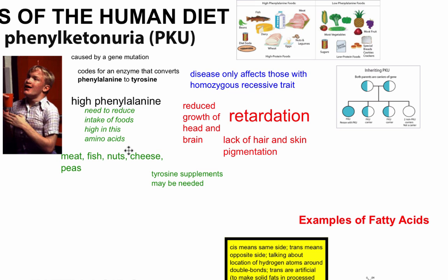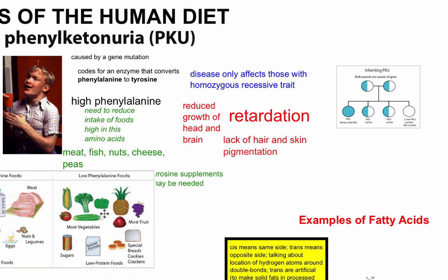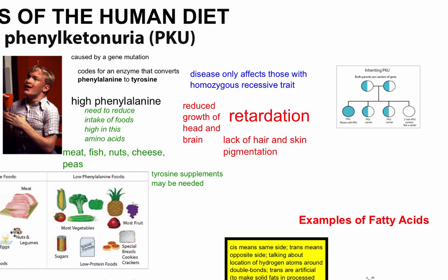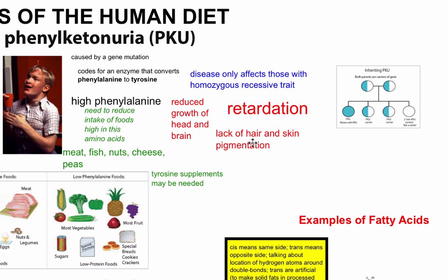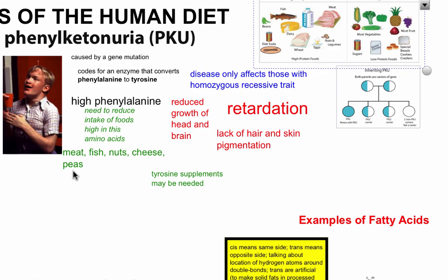Foods like meat, fish, nuts, cheese, and peas need to be kept under control if you have PKU. If phenylalanine isn't controlled, it can cause reduced growth of the head and brain, various forms of cognitive impairment, and a lack of hair and skin pigmentation. So diet has to be carefully managed if you're suffering from this condition — it's just one of many different types of metabolic diseases.